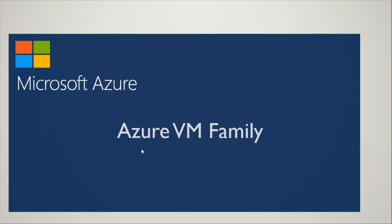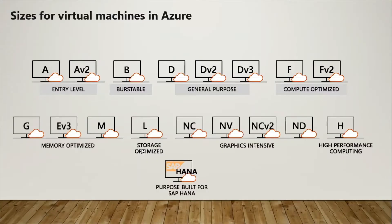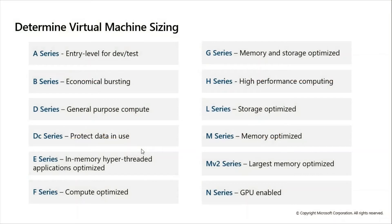The VM size starts with entry level. When choosing the low-level entry level, you will get around one or two GB of RAM. When you go into higher levels, you will get more RAM and the cores will be increased — 2 core, 8 core, 16 core, and 64 core. So when choosing higher-end sizes, you get a higher number of cores and higher RAM.